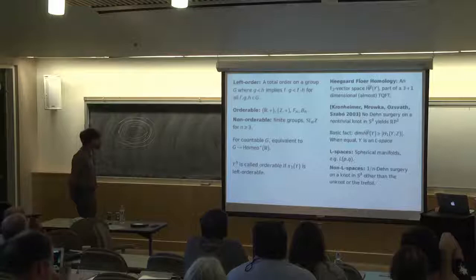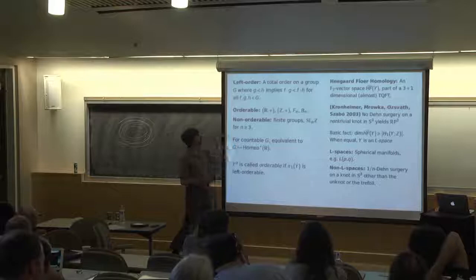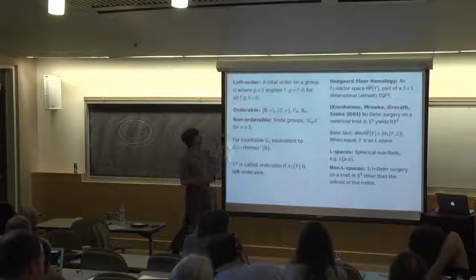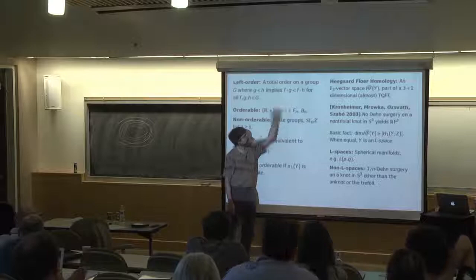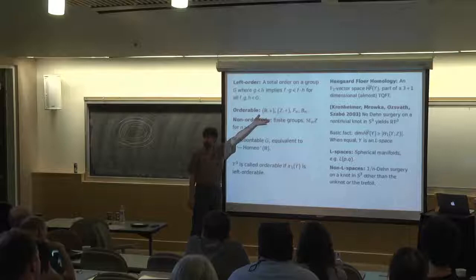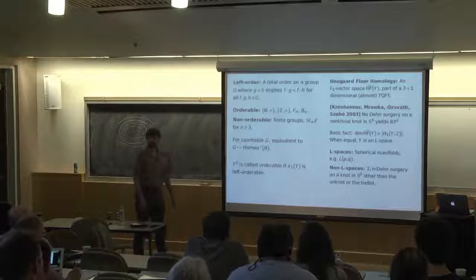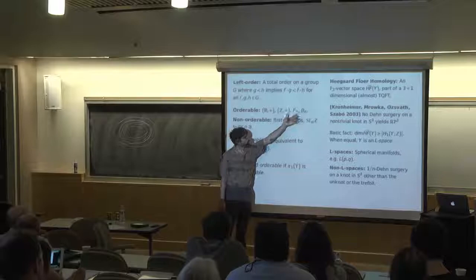So that was thing one: Heegaard Floer homology. Thing two is just some algebraic notion. If I have a group G, a left order on that group is just a total order on its elements which is invariant under left multiplication. So in particular, if you have element G less than H and you pick another element F, then F times G has to be less than F times H. The basic example of an orderable group is just take the real numbers viewed as a group under addition with the usual notion of less than. For countable groups, Z is a better example. It turns out free groups are left-orderable, as are braid groups.